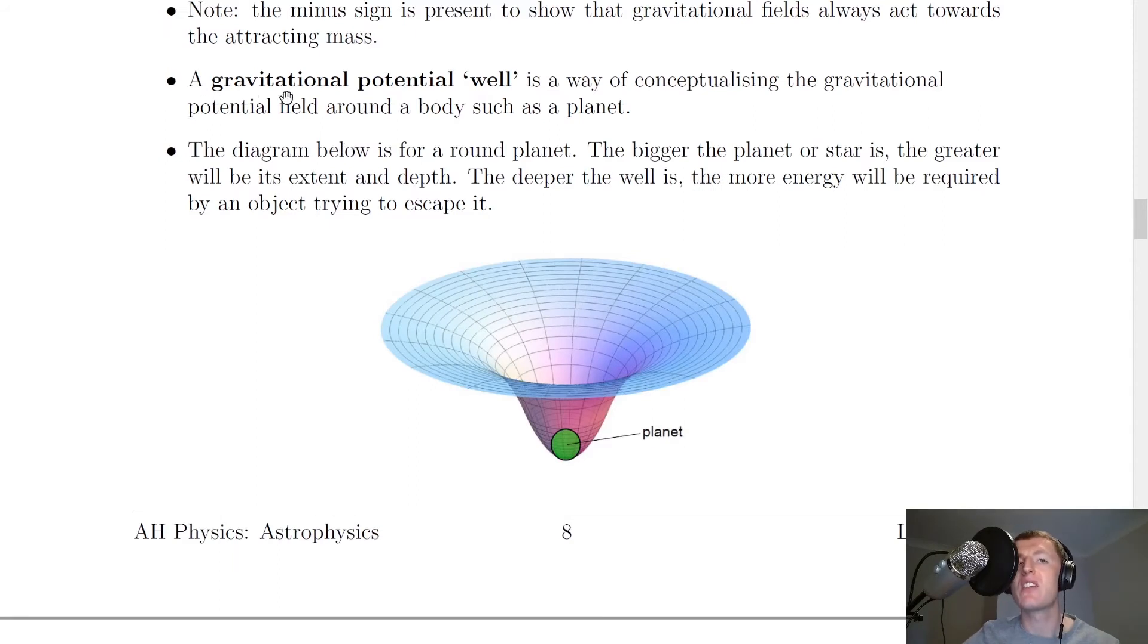Going back to the notes now, it says that a gravitational potential well is a way of conceptualizing the gravitational potential field around a body such as a planet. The diagram below is for a round planet. The bigger the planet or star is, the greater will be its extent and depth. The deeper the well is, the more energy will be required by an object trying to escape it.